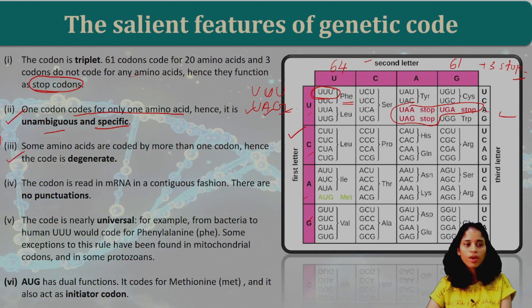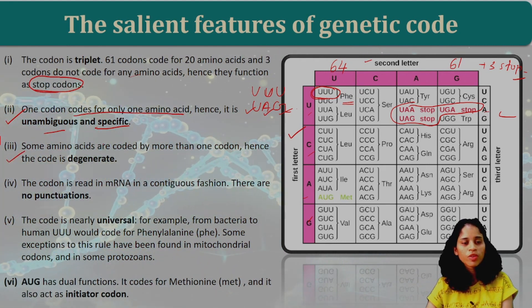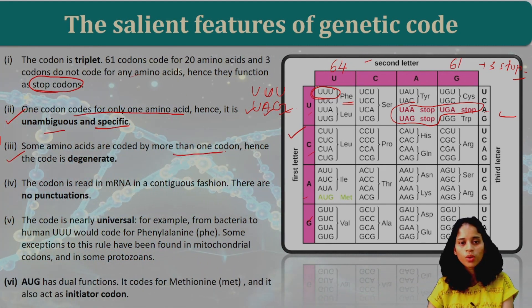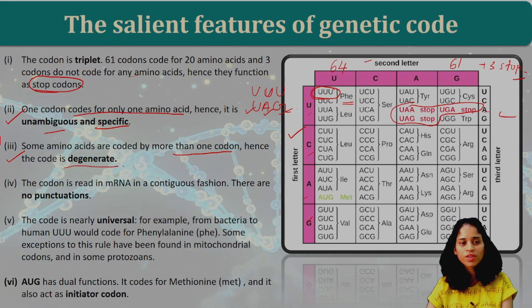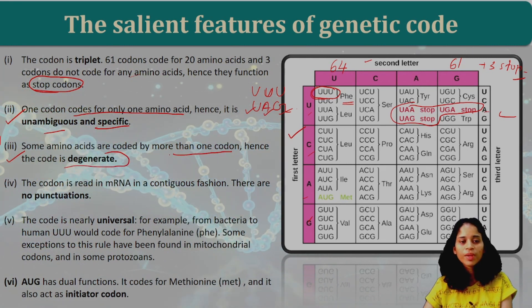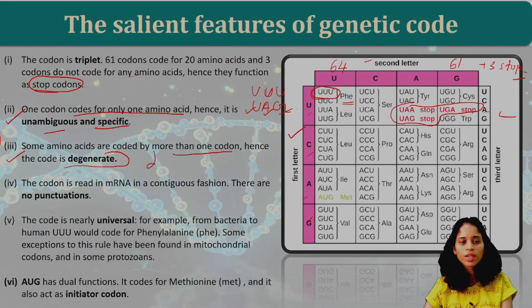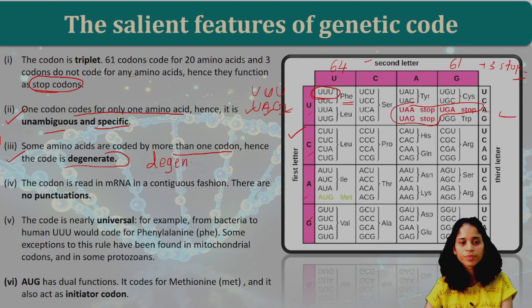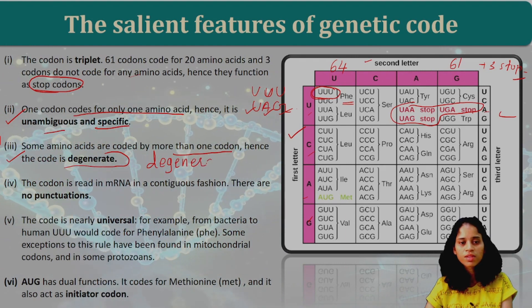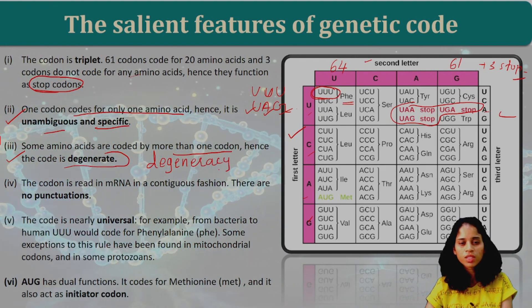Third point: some amino acids are coded by more than one codon. Hence, the code is degenerate. This is called the degeneracy of the genetic code.